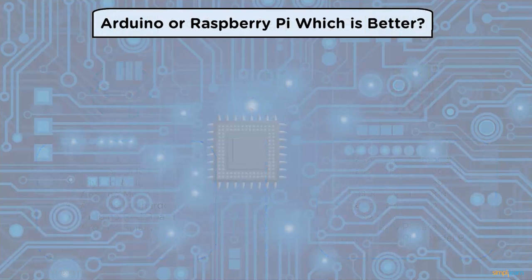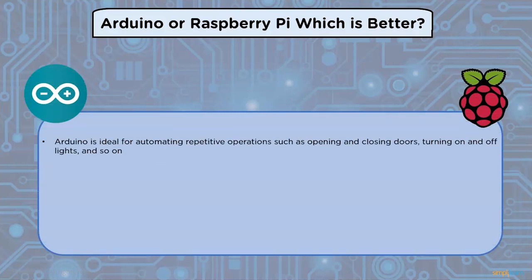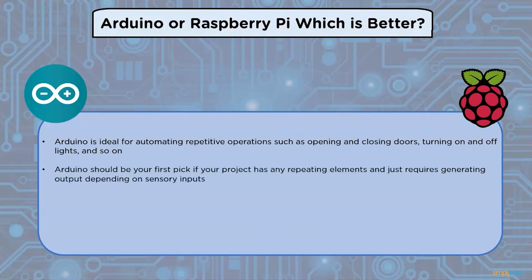Arduino or Raspberry Pi — which is better? Arduino and Raspberry Pi have their own set of benefits and drawbacks. The best option will be determined by the requirements of your project and your budget. Arduino is ideal for automating repetitive operations such as opening and closing doors or turning lights on and off. Arduino should be the first pick if your project has repeating elements and only requires generating output based on sensory inputs.